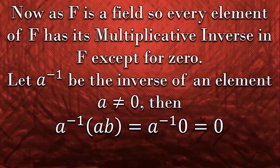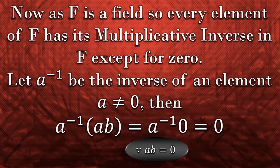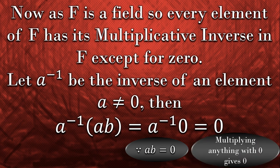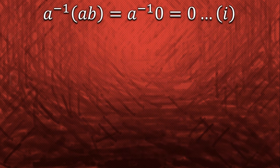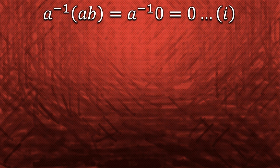Now, multiplying a inverse with ab, we got 0. Because ab is equal to 0 as per our assumption and multiplying a inverse with 0 gives 0. For further use, I am gonna name this equation as equation number 1 and keep it aside.